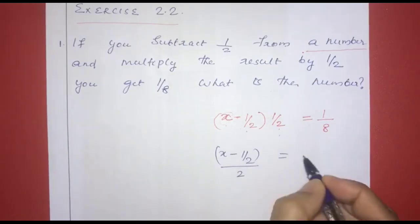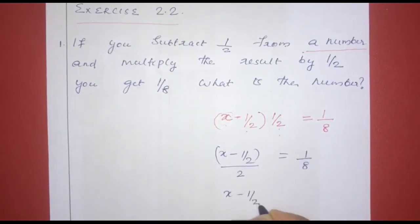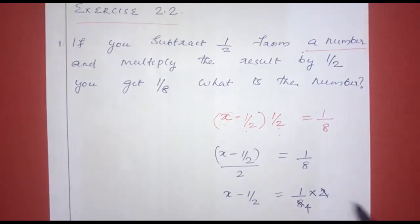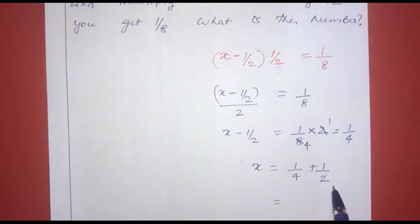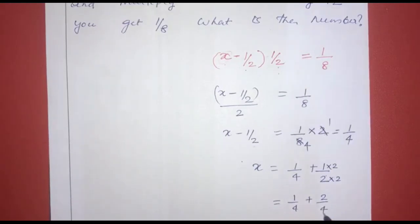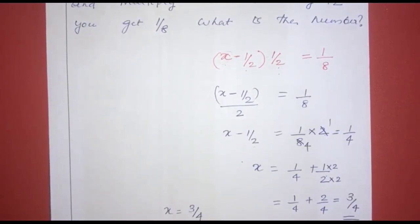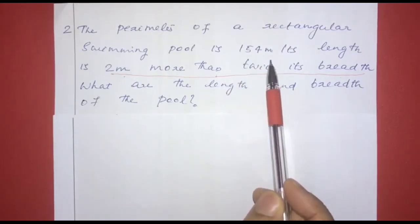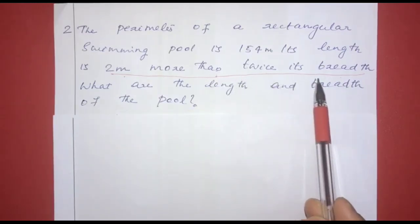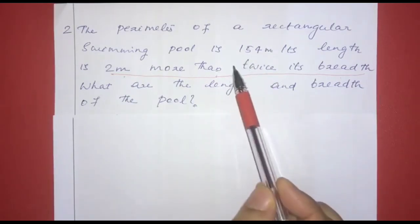Multiply the result by 2; divide the result by 1/8. That means x minus 1/2 is equal to 1/4. So x equals 1/4 plus 1/2, which gives us 1/4 plus 2/4. The denominator equals 4, so x equals 3/4.